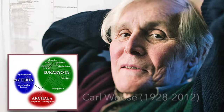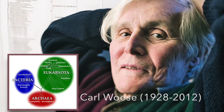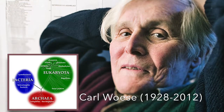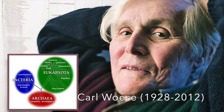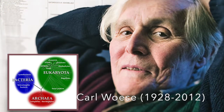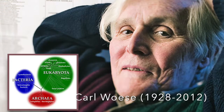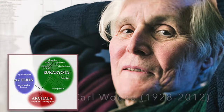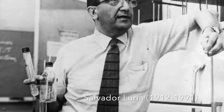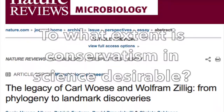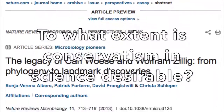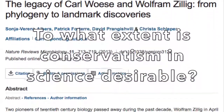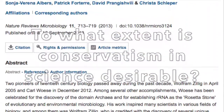In reference to TOK, a major step forward in the study of bacteria was the recognition in 1977 by Carl Woese that archaea have a separate line of evolutionary descent from bacteria. Famous scientists, including Luria and Mayr, objected to the division of the prokaryotes. To what extent is conservatism in science desirable?